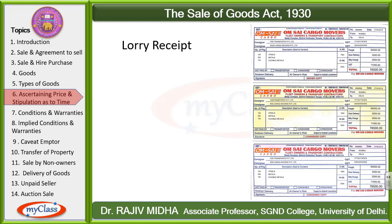To summarize this lecture: we studied 5 ways to ascertain price, and divided stipulation as to time into two parts — stipulation as to time of payment of price, which is not essential to the contract, and stipulation as to time of delivery of goods, which is very essential. We also covered documents of title to goods, through which ownership of goods is established, allowing the holder to receive or transfer the goods. Thank you very much.